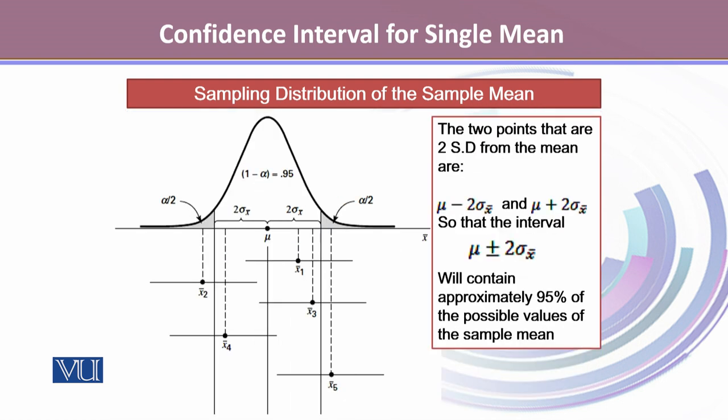The two points that are 2 standard deviations from the mean are given by the interval μ ± 2σ_X̄. This will contain approximately 95% of the possible values of the sample mean.